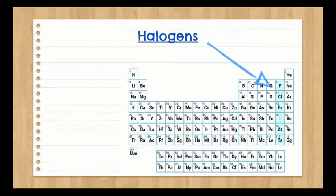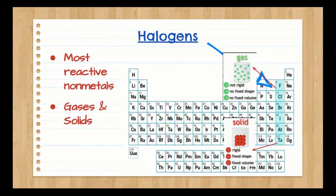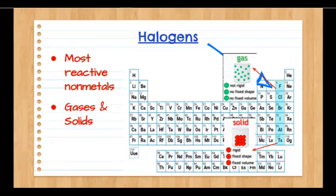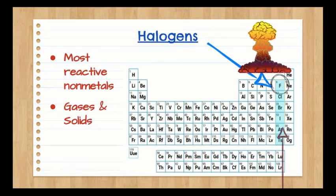Halogens are very reactive nonmetals. They are gases at the top and become solid as you move down. The halogens family possesses the most reactive elements on the periodic table and become less reactive as you move down the group, which is the opposite of the trend in the alkali metals family.